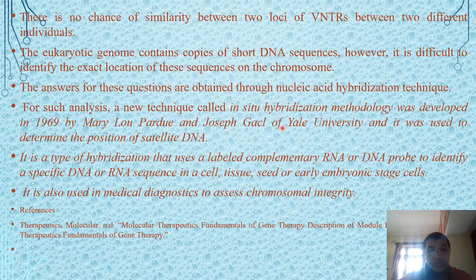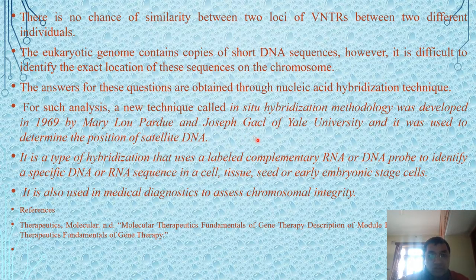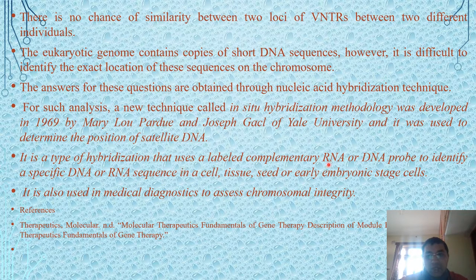For such problems, a nucleic acid hybridization technique is used. A new in-situ hybridization methodology was developed in 1969 by Mary Lou Pardue and Joseph Gall of Yale University. Through this technique you can identify the position of satellite DNA. A labeled complementary RNA or DNA probe is used to identify specific DNA or RNA sequences in a cell, tissue, seed, or early embryonic stage. This technique is also used in medical diagnosis to assess chromosomal integrity.